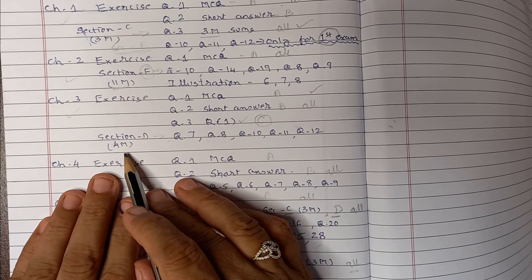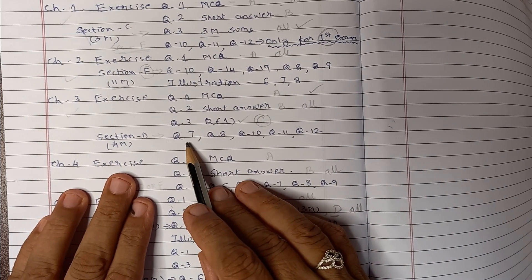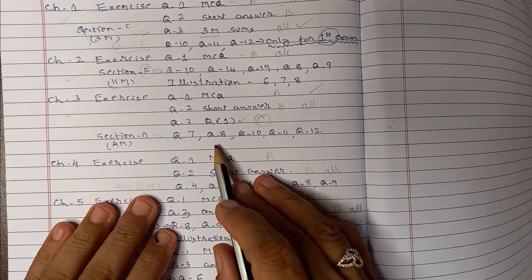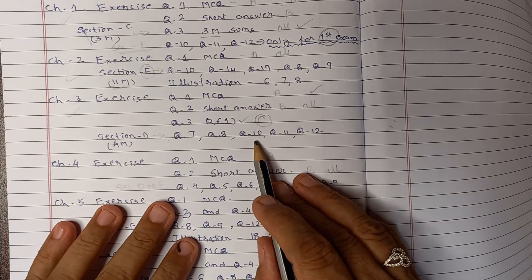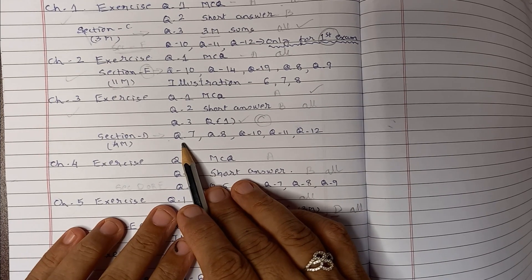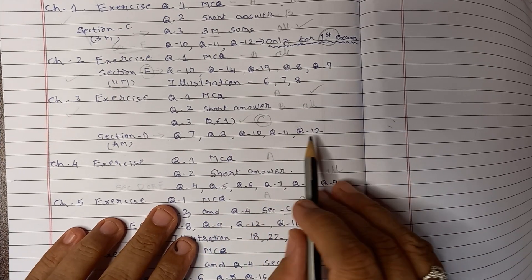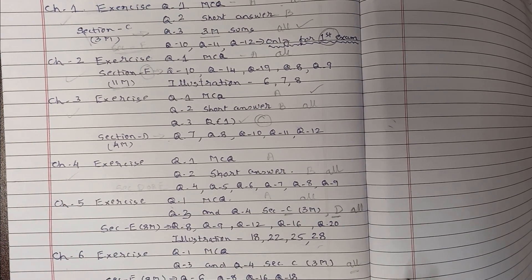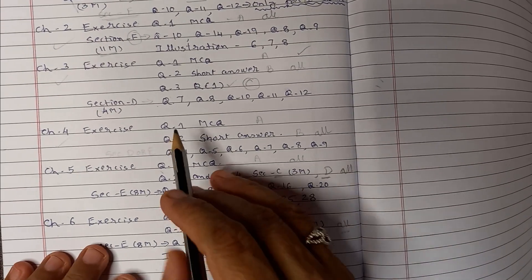For the D section, for my question you have from this chapter, that is the goodwill calculation: weighted average method, then your super profit method, capitalized method. So question 7A, 10, 11, 12 are good.